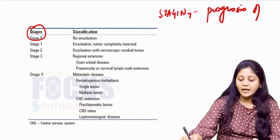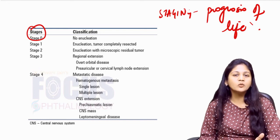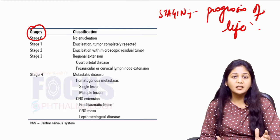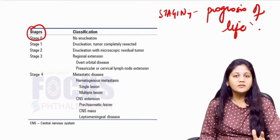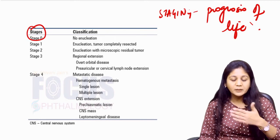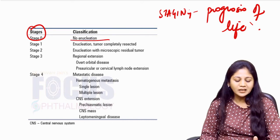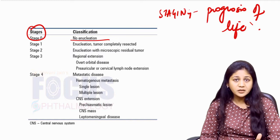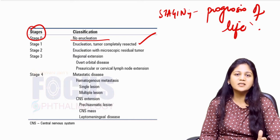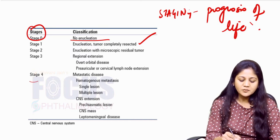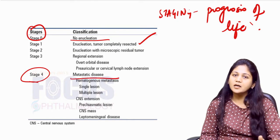Staging tells you about the prognosis for life — i.e., the survival of the patient after enucleation. Stage 0 is when enucleation has not been performed; the remaining stages apply after enucleation, reflecting how completely the tumor was resected. Stage 4 disease carries a very grim prognosis as it indicates spread.